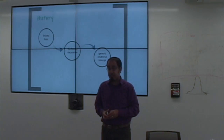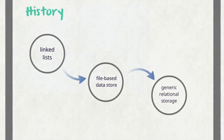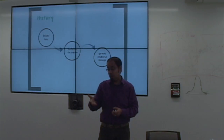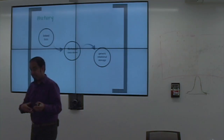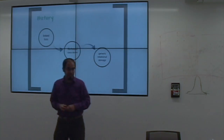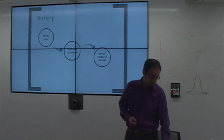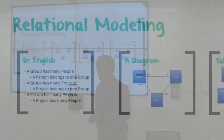Historically, they started off storing data in linked lists — you would have one dataset and a pointer to another piece of data and a pointer to another piece of data, and that was a big pain. Then they started using disk-based storage mechanisms where you would basically know that if you wanted to look something up, it was around a certain location on the hard drive. They quickly realized that was also a pain, so they moved to generic relational storage.